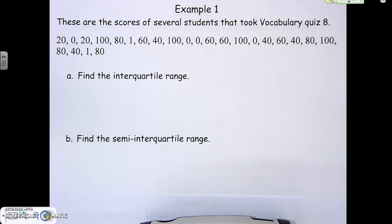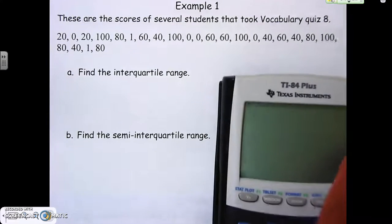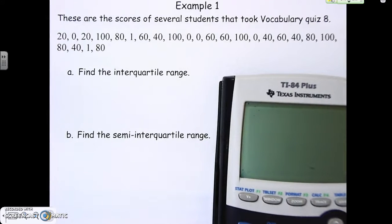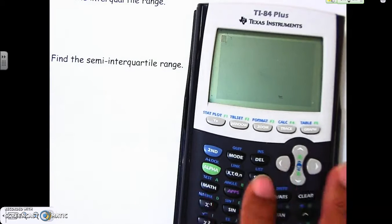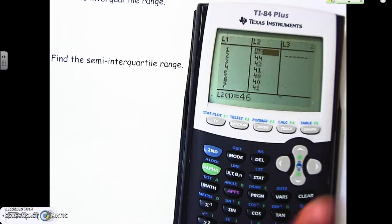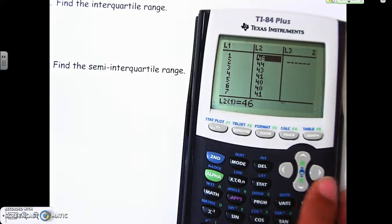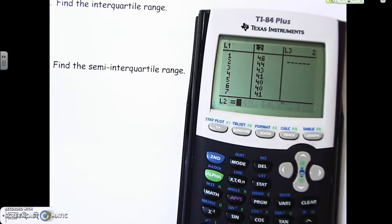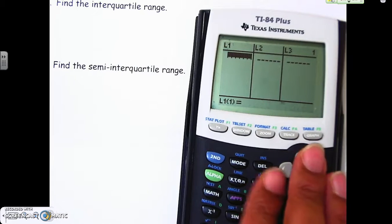We talked about this already with that worksheet on mean, median, mode, and range. We're going to go back into our calculator, turn it on, hit the stats button, and hit enter for edit. Don't worry about these numbers, we can clear those out.